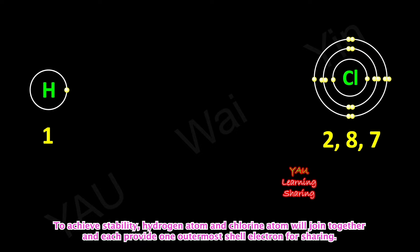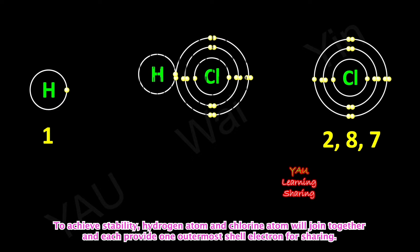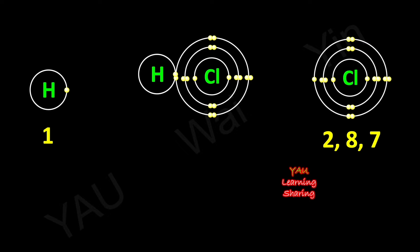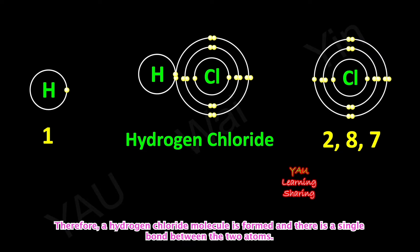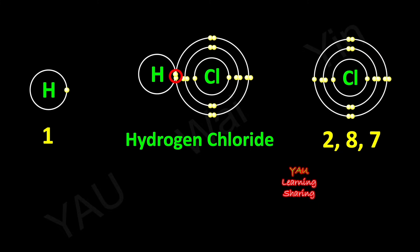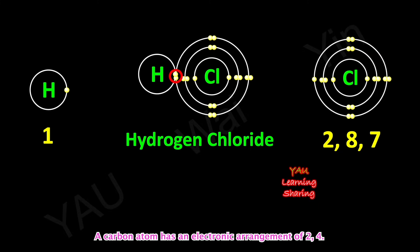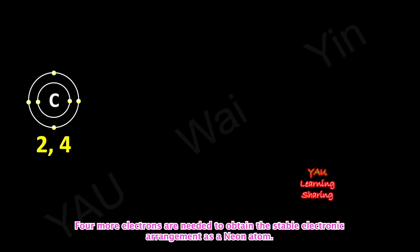To achieve stability, a hydrogen atom and a chlorine atom will join together and each provide one outermost shell electron for sharing. Therefore, a hydrogen chloride molecule is formed, and there is a single bond between the two atoms. A carbon atom has an electronic arrangement of two, four — four more electrons are needed to obtain the stable electronic arrangement of a neon atom.